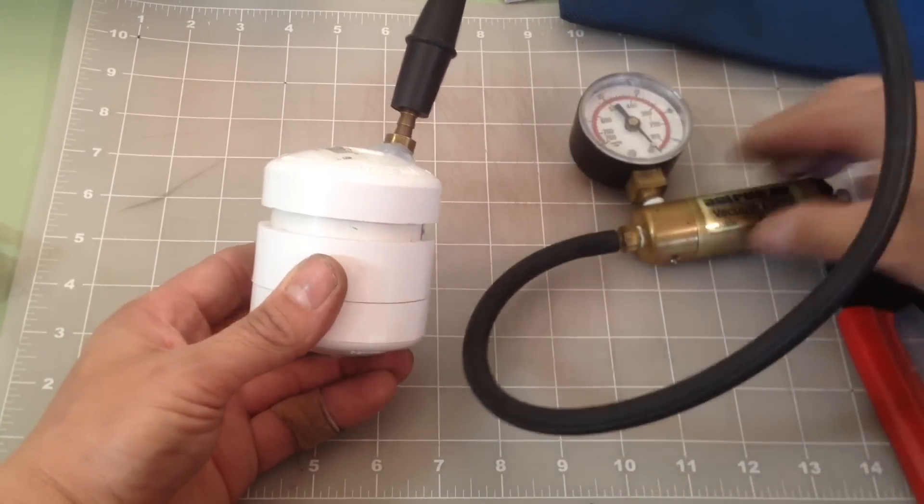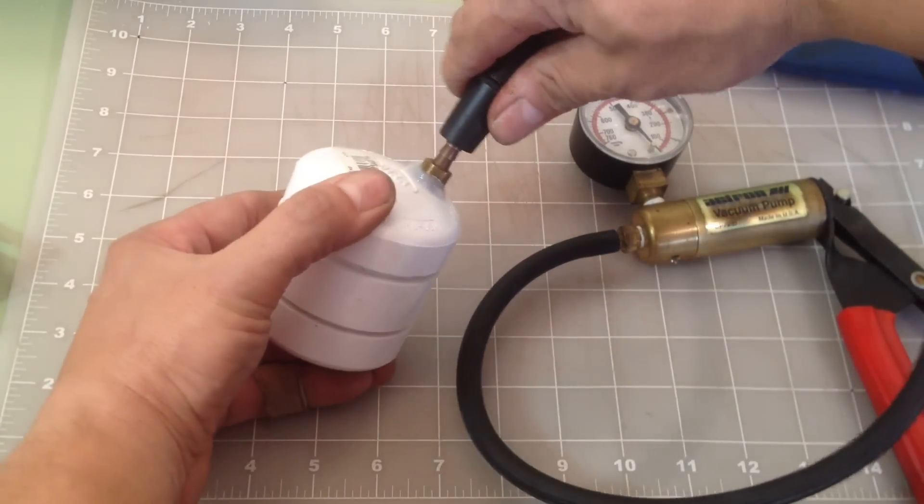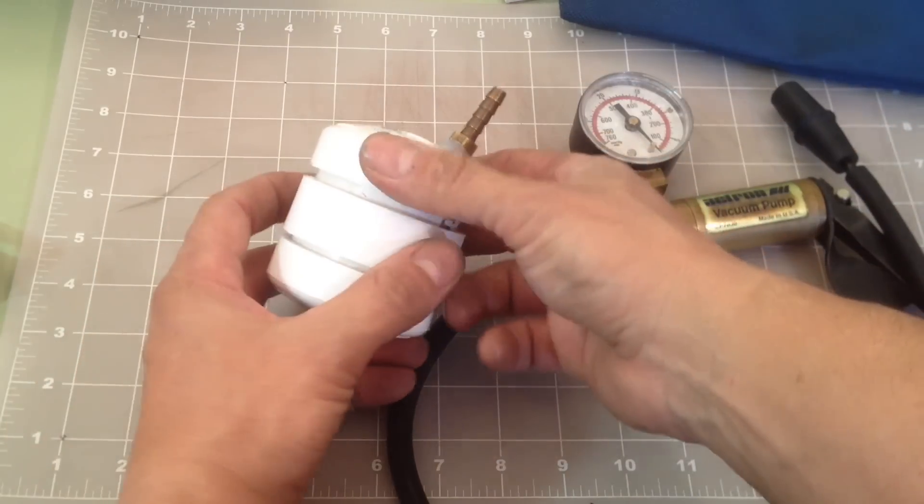Once the air pressure is equalized I remove the hose from the barb fitting and easily disassemble the chamber components.